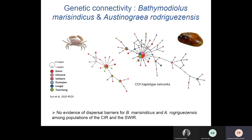Haplotype networks of both Austinograea crabs and Bathymodiolus mussels show similar patterns of high connectivity between vent sites on the Central Indian Ridge and the Southwestern Ridge, with no apparent dispersal barriers for these two species. This contrasts with what is observed for the scaly-foot gastropod, meaning that species-specific factors are also controlling migrant exchange and points to the importance of understanding larval biology and dispersal. These require other approaches that, to my knowledge, have not yet been used for species of the Indian Ridge.